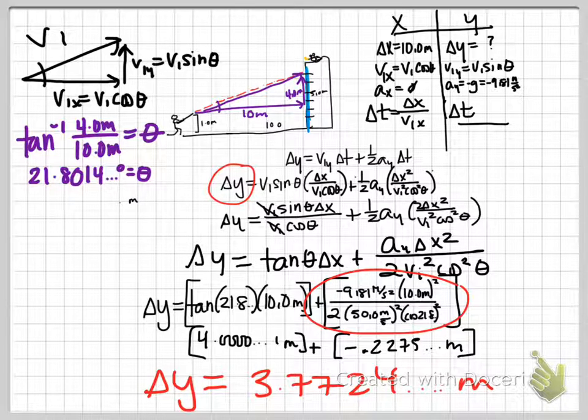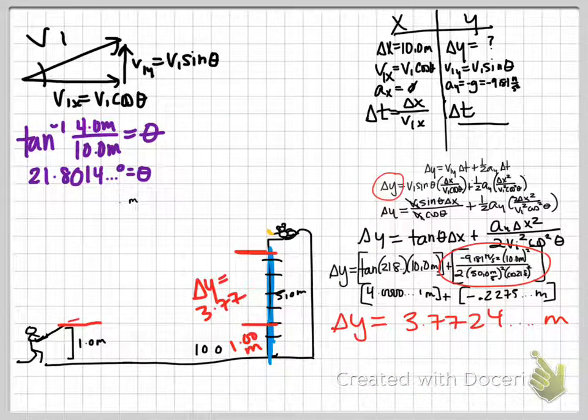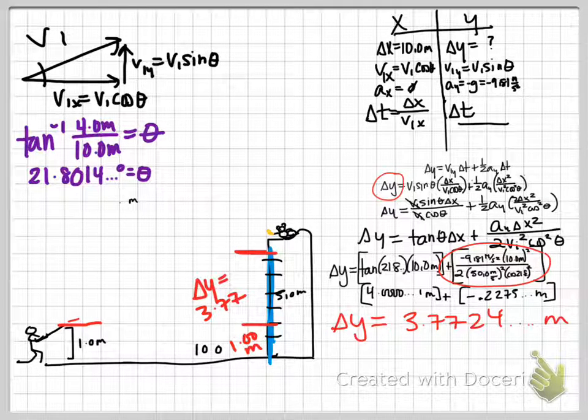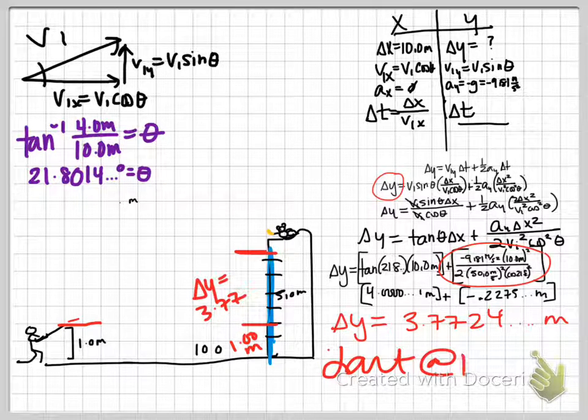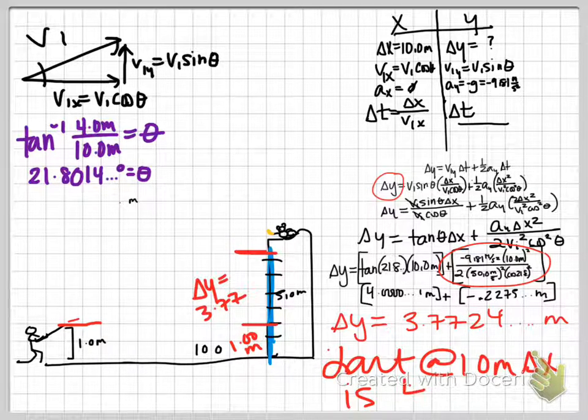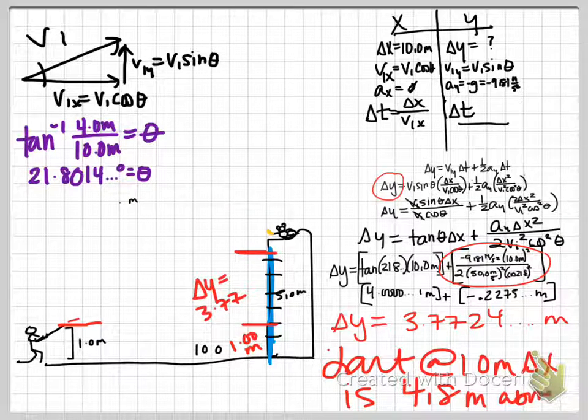What does that mean? Does that tell us exactly where the dart's at? What it tells me is that the dart is 3.77 meters above the tip of the gun. This is where you have to go back to the original situation and think about what the numbers mean. You can get numbers and not know what to do with them. How far above the ground is the dart? Well, 1 meter plus the 3.77, so 2 sig figs. Dart at 10 meters delta X is 4.8 meters above ground.